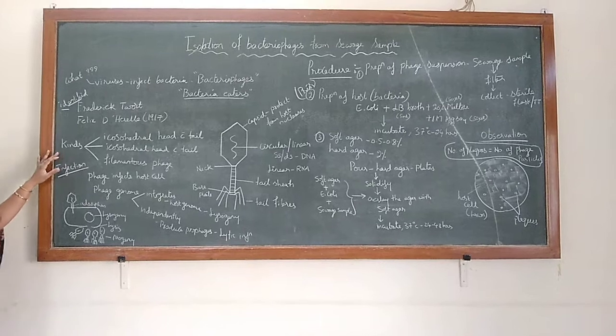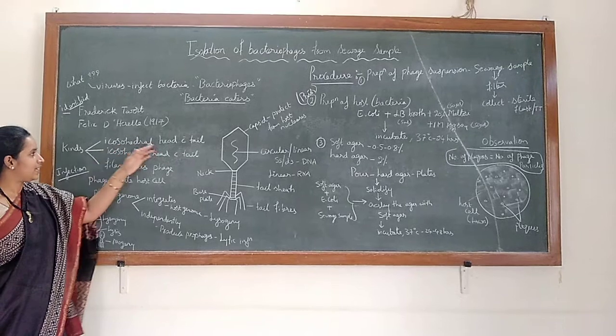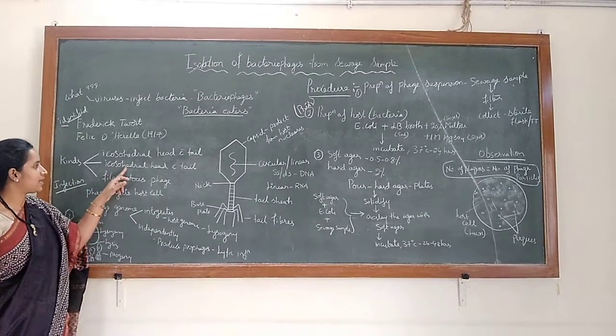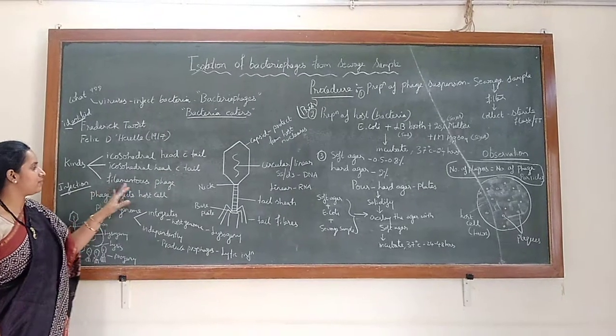And if you look at the different kinds of bacteriophages, there are three types: icosahedral head without tail, icosahedral head with tail, and filamentous phages.